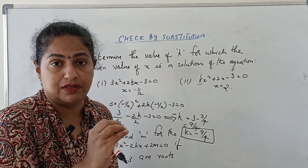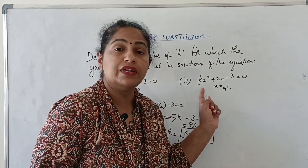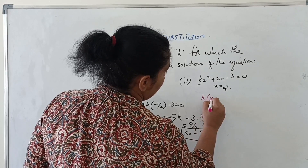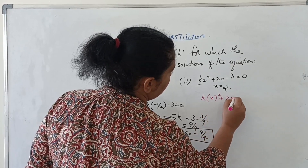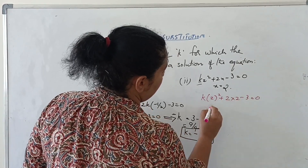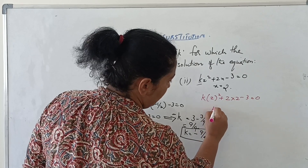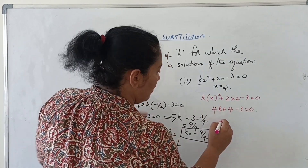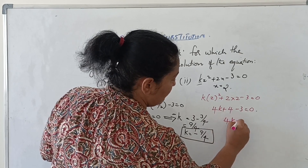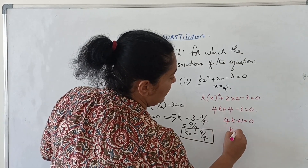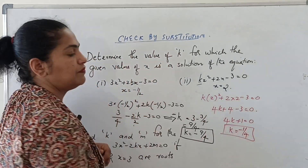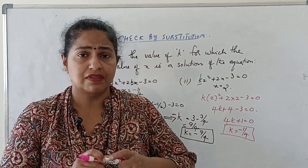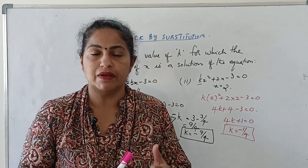For the second equation with x = 2: substituting gives k(2²) + 2(2) − 3 = 0, so 4k + 4 − 3 = 0, giving 4k + 1 = 0, therefore k = −1/4. Same method as the previous one — substitute the given root, equate to 0, and solve for k.